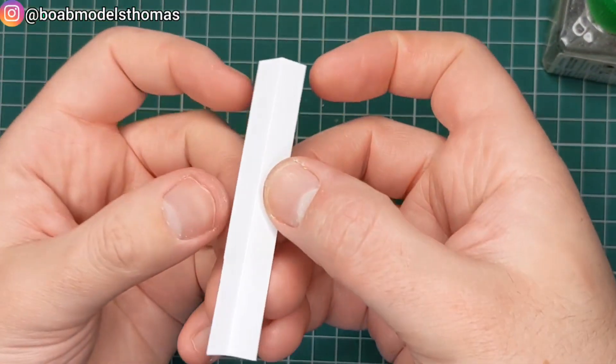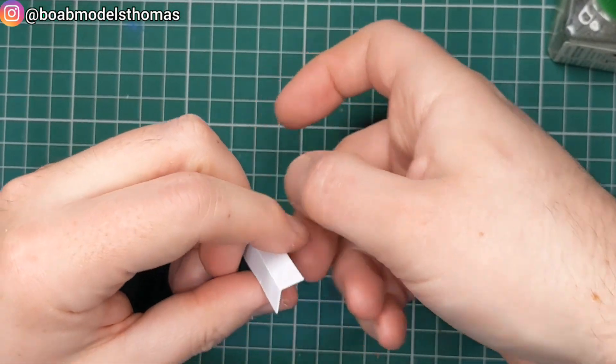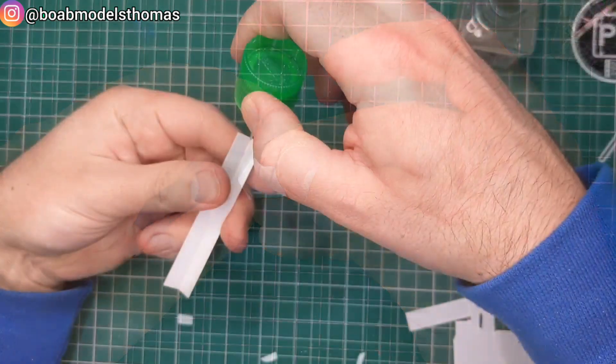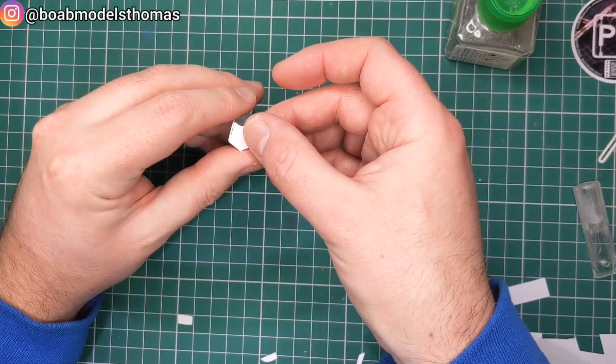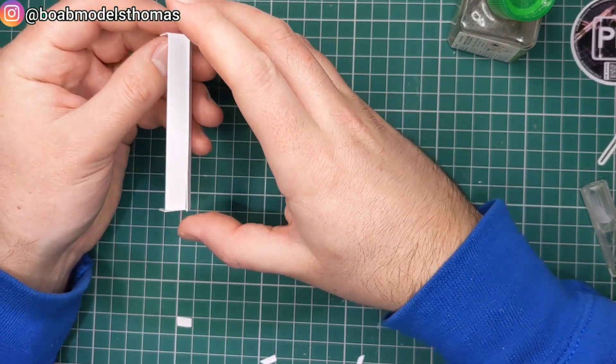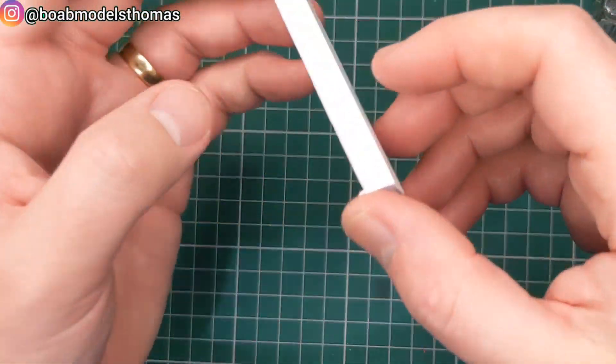To do this, I am using 0.5mm styrene card. I printed off a few overhead photos and scaled them to the right size and used that to help get the size correct. I'm using some Tamiya Extra Thin to cement these together.